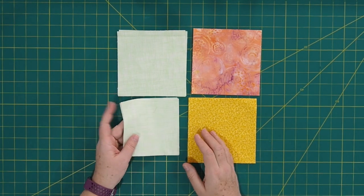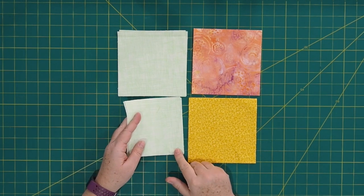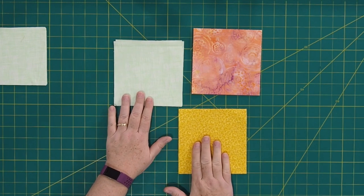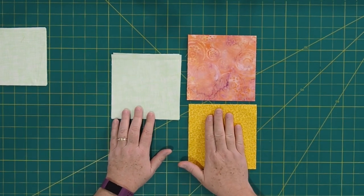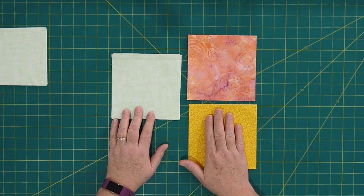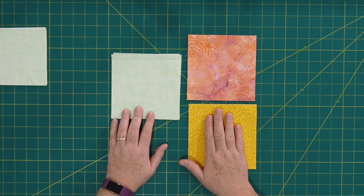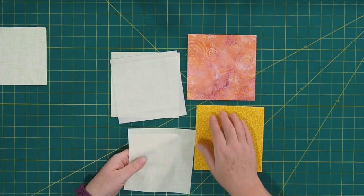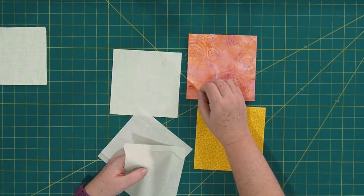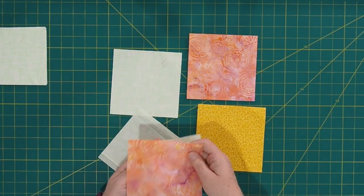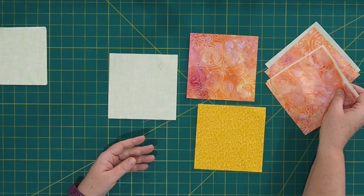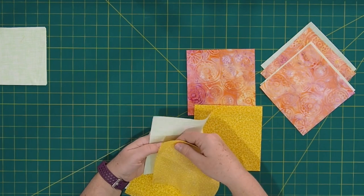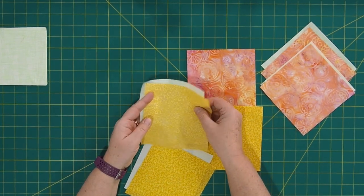Okay, so the first thing we're going to do is set aside those five-inch squares because we're not going to use those until the very end when we're putting the whole block together. And then you're going to need to pair up all of these different squares. So what you need to do is you need two pairs of the background fabric, and I'm going to pair them up before I start sewing them, with fabric A.